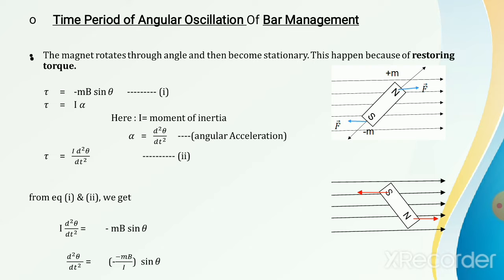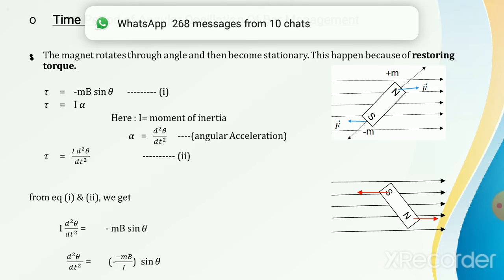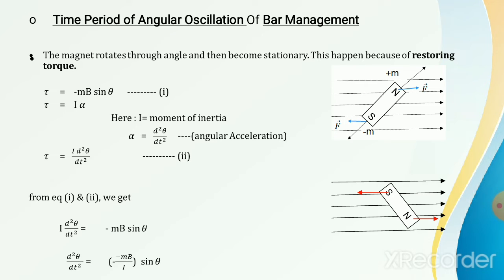Due to that reversed force, your bar magnet will rotate in the opposite direction. This opposing force creates a restoring torque. The formula for torque we have discussed is mB sinθ. Because of the reverse direction, the formula for the restoring torque becomes minus mB sinθ.